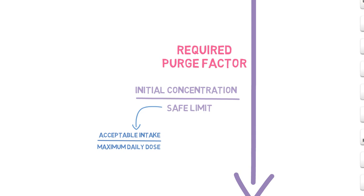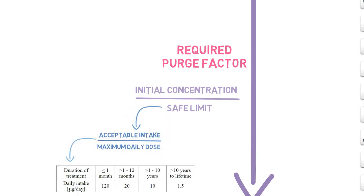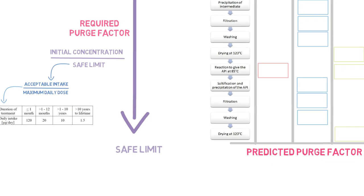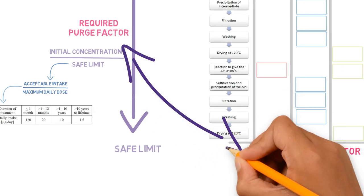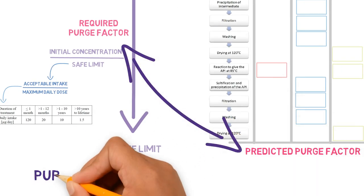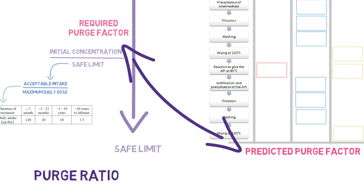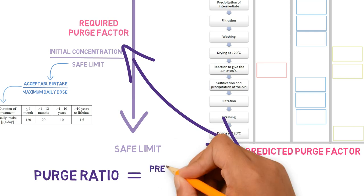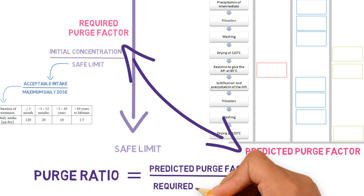The acceptable intake can vary depending on the treatment duration. When we compare the predicted purge with the required purge, we get the purge ratio, which is the most important result when we want to show elimination of a certain impurity. The purge ratio is the predicted purge divided by the required purge.